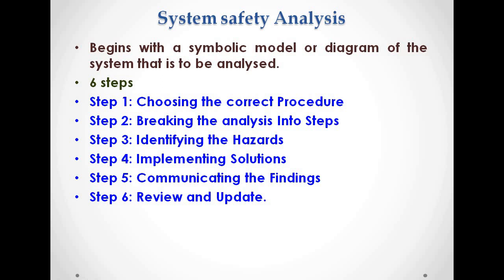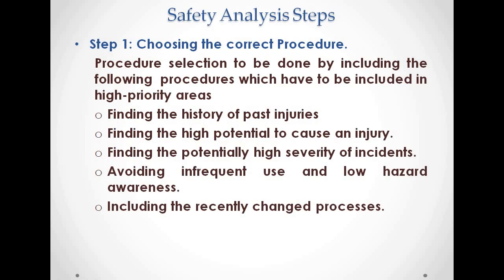System safety analysis begins with a symbolic model or diagram of the system that is to be analyzed. This can be described in six steps: step 1 is choosing the correct procedure, step 2 is breaking the analysis into steps, step 3 is identifying the hazards, step 4 is implementing the solutions, step 5 is communicating the findings, and the 6th step is review and update. Now let us see each step in detail.